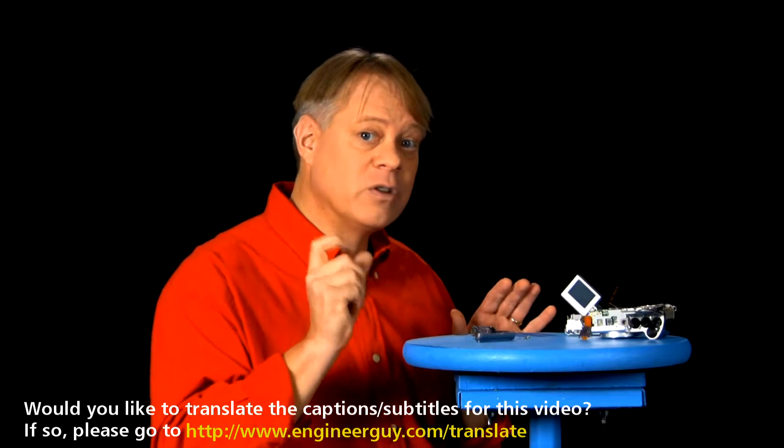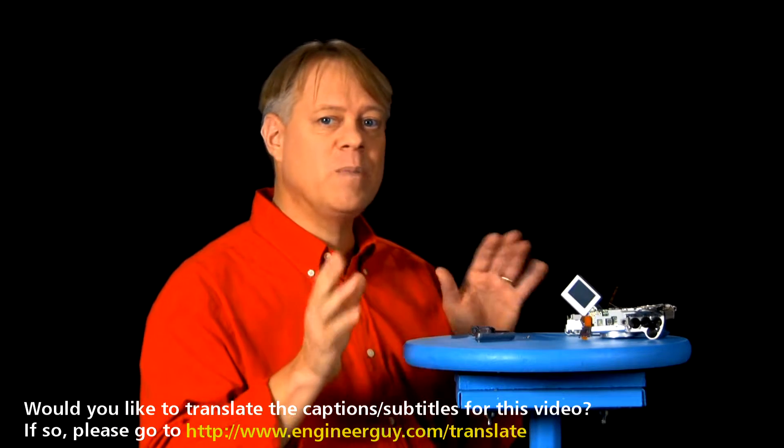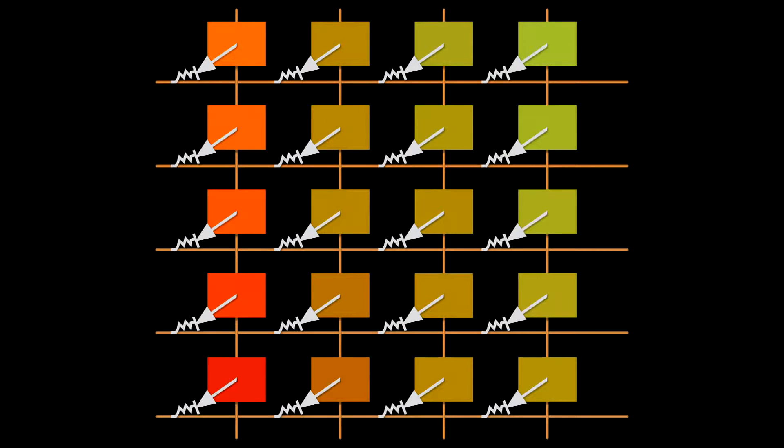Now, the key to understanding how digital photography became cheap and ubiquitous lies in the ingenious way that the CCD transfers the image into the camera's memory. The easiest and most straightforward way would be to use wires to connect each pixel in an XY grid. But that presents a problem. Here's what goes wrong.